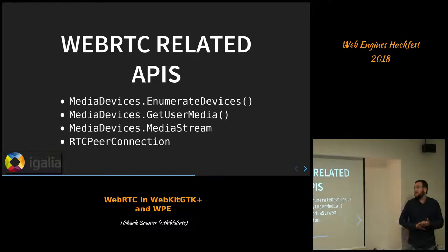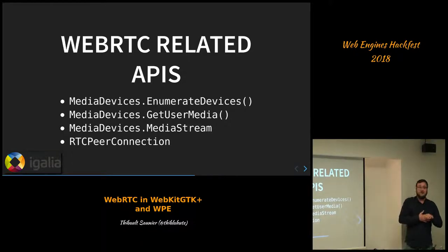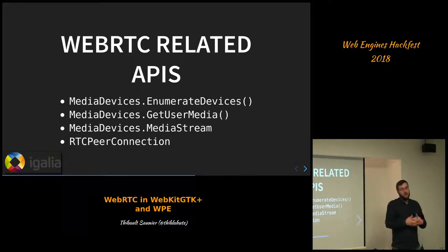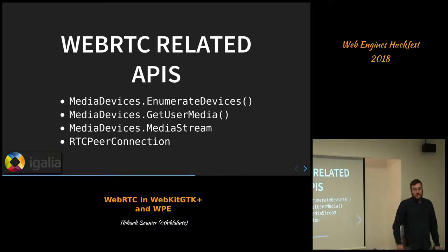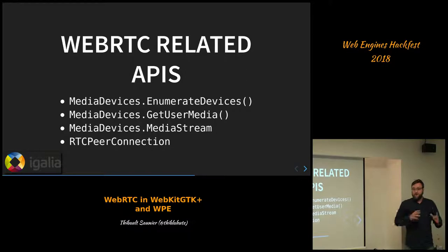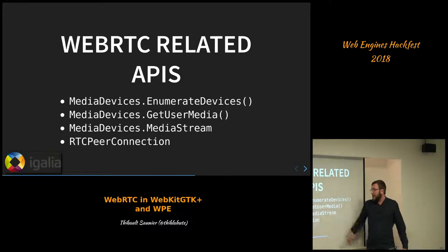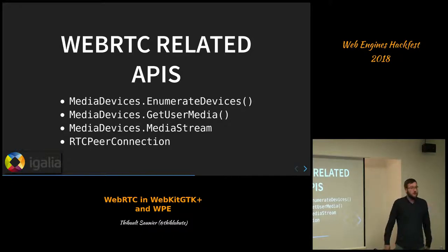We had a few APIs to implement. Basically: enumerate devices, which is an API to list all the devices — microphones and cameras — done via the GStreamer device monitor API. Then getUserMedia, where you retrieve the media stream — you get the camera stream, or a stream from a canvas inside the web page. And then you can send that through the RTCPeerConnection, which is the core of WebRTC itself, handling the negotiation about how the stream will be set up for video conferencing. That part is where LibWebRTC is used.